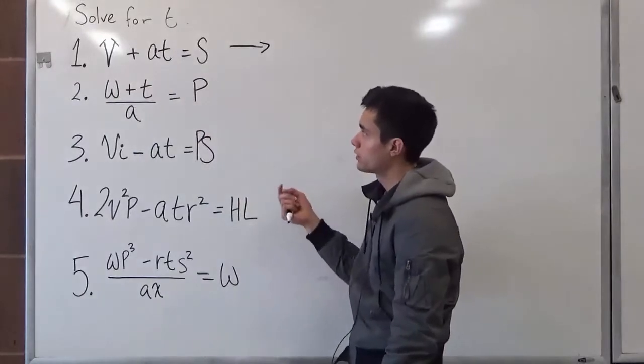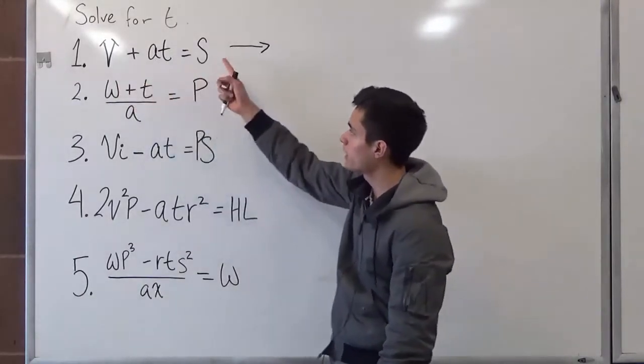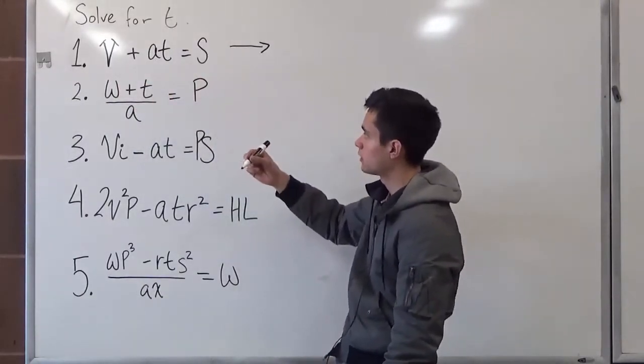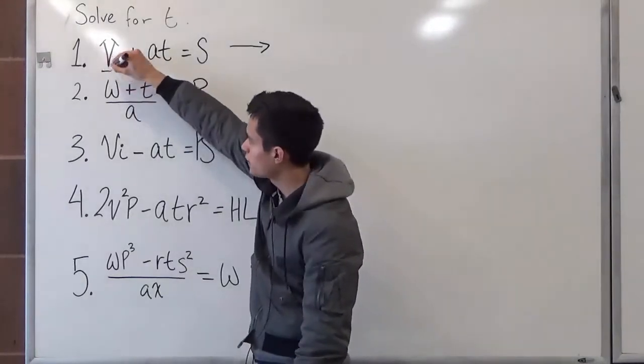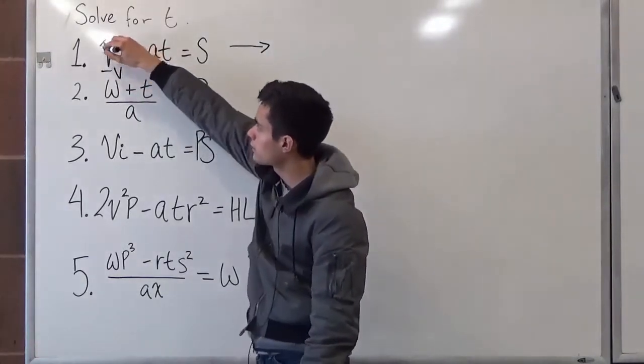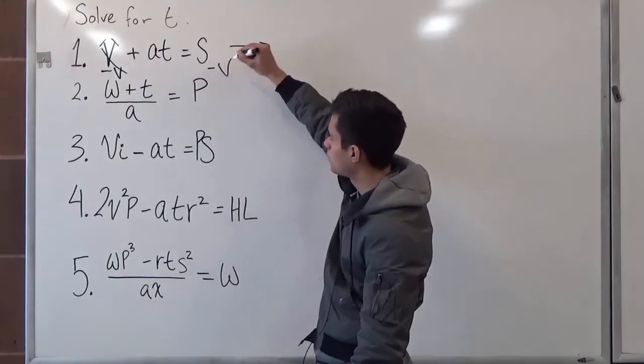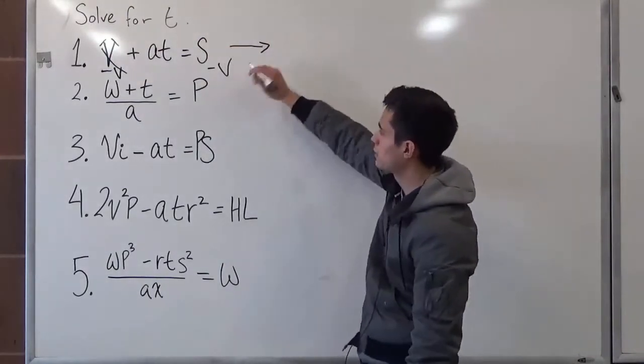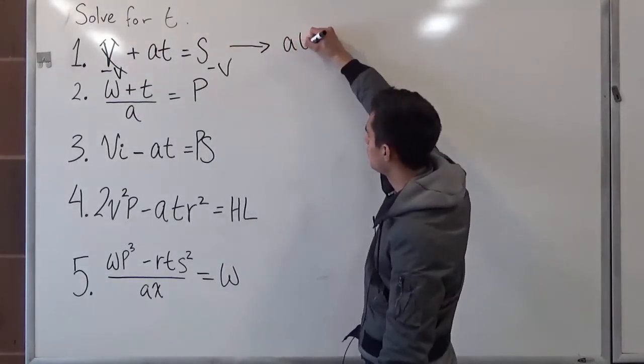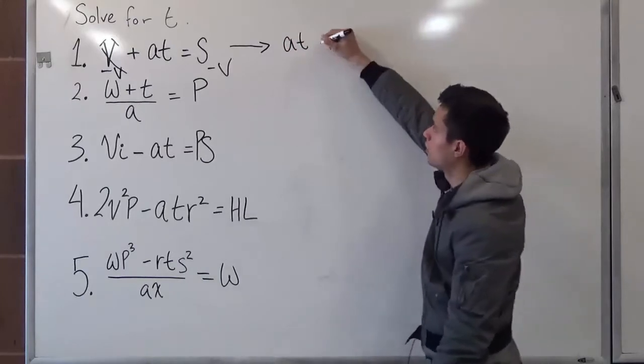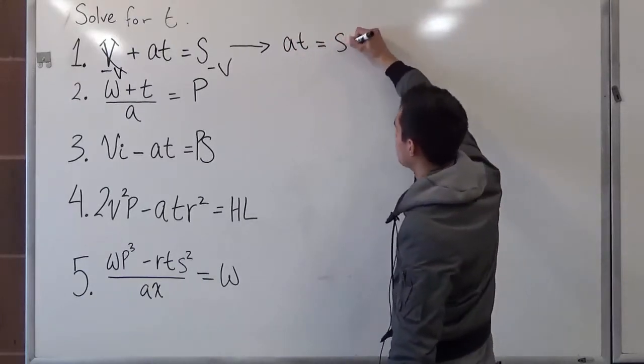What we can do first is move v to the right-hand side by subtracting it. So we can go minus v, and this cancels out minus v. So what this basically means is that at, or a times t, will equal to s minus v.